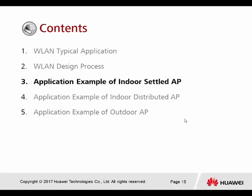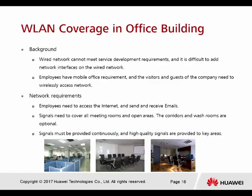Application example of indoor sector AP: dual-link coverage in an office building. The wire network cannot meet service deployment requirements and it is difficult to add network interfaces. Employees have mobile office requirements and visitors need to wirelessly access the network. The requirements are: employees need to access the internet and send/receive email, signals need to cover all meeting rooms and open areas, and corridors and washrooms are optional coverage areas.